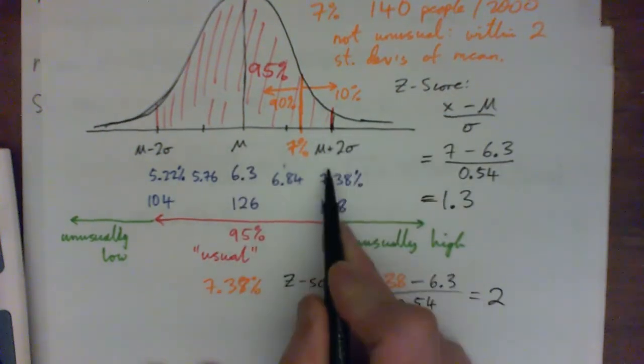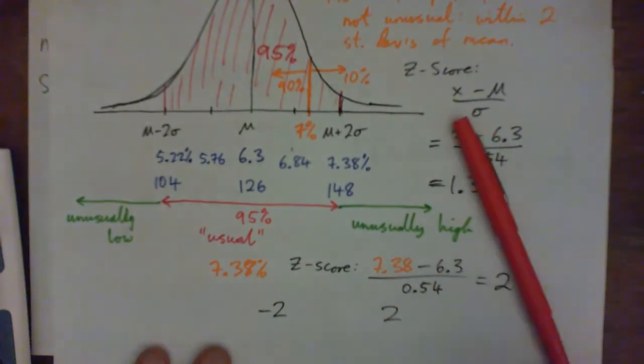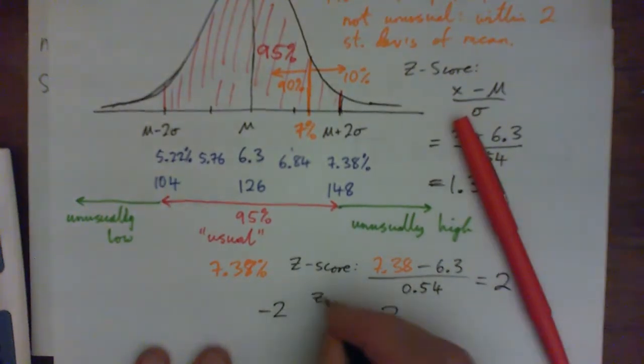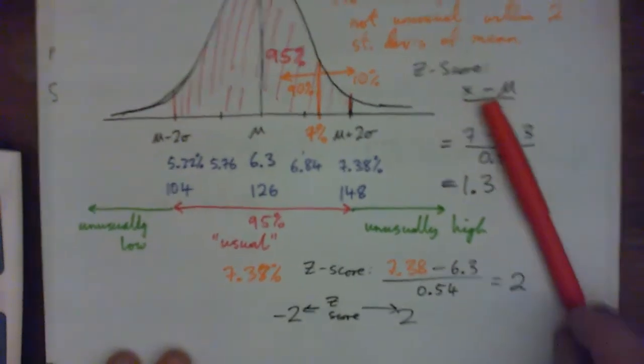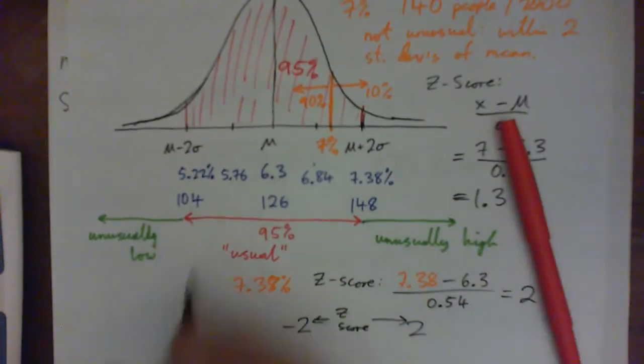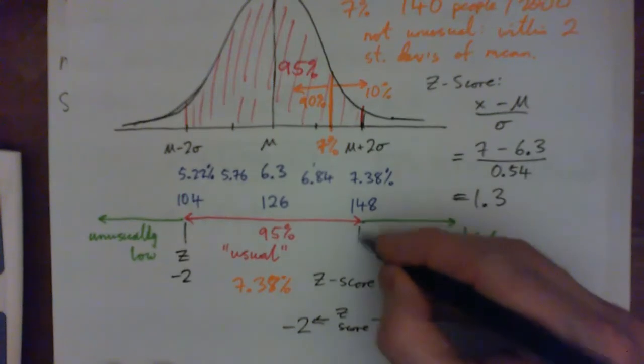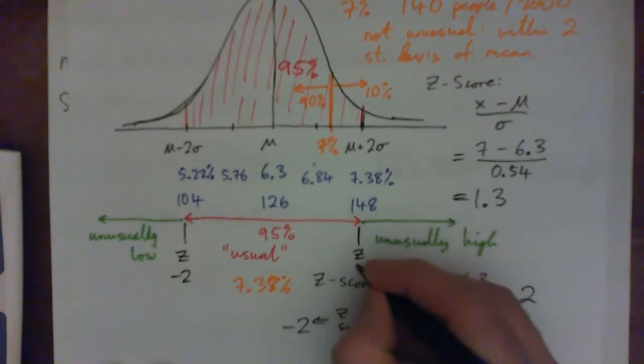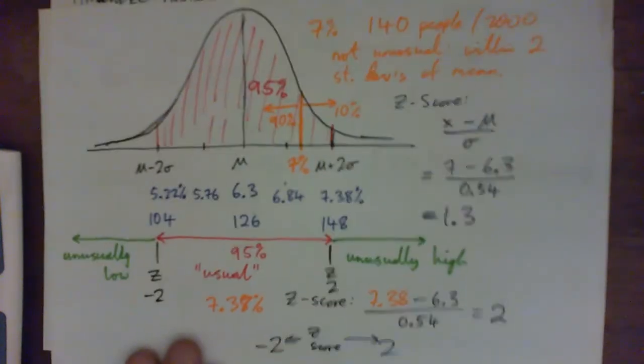Yeah. Right. So in other words, if our Z-score is between negative 2 and 2, if you take your Z-score and it's between negative 2 and 2, that means usual, doesn't it? Yes. Right? Yeah, because in other words, this end is a Z-score of negative 2, right? And this end of the usual part is a Z-score of positive 2, isn't it? Yes. Right. So there we go. I think we've beaten it to death.